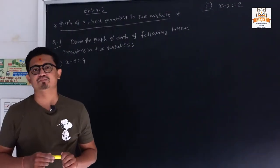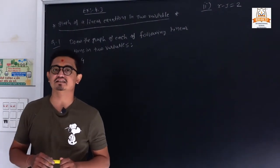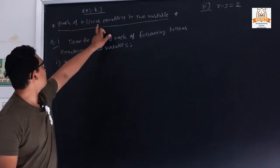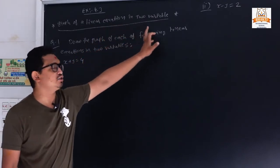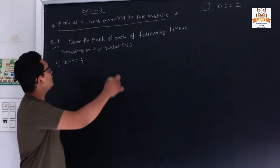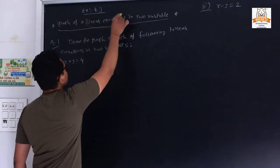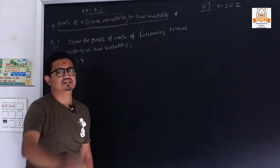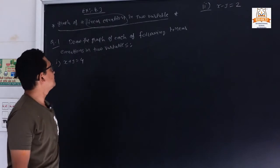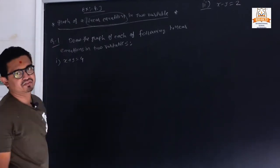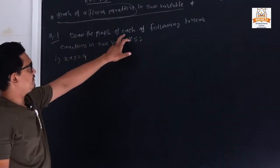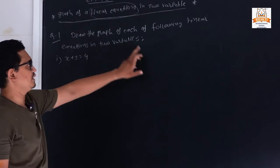Exercise 4.3. Before starting exercise 4.3, remember one important thing: if we have a linear equation, the graph is always a straight line. We can start with question number 1, which asks us to draw the graph of each of the following linear equations in two variables.